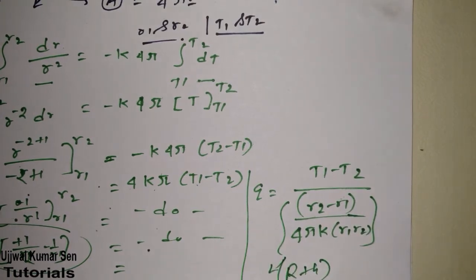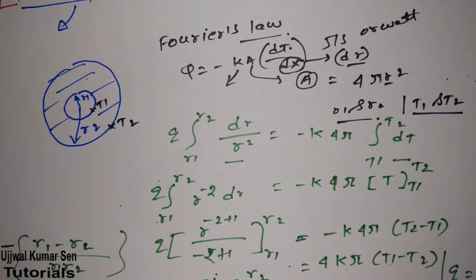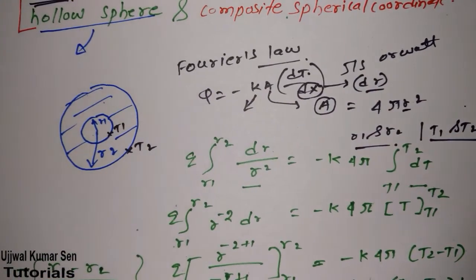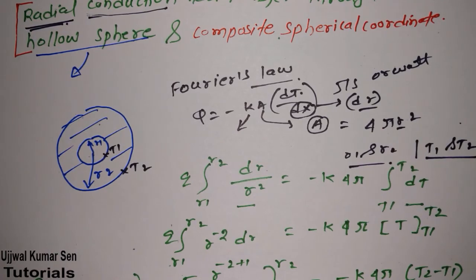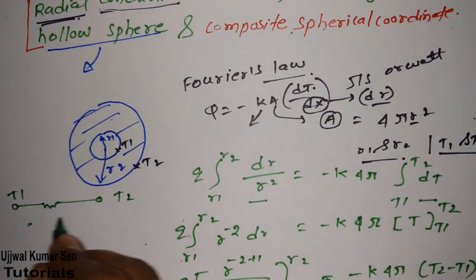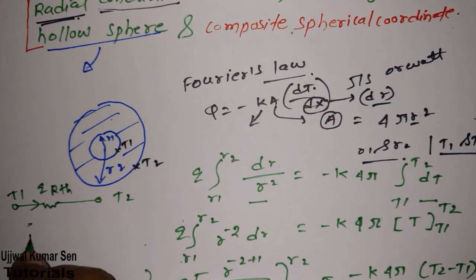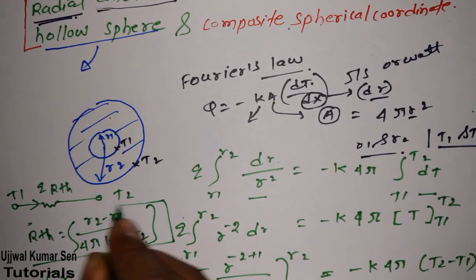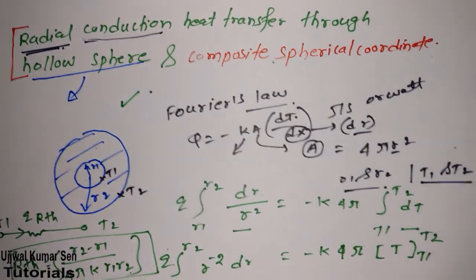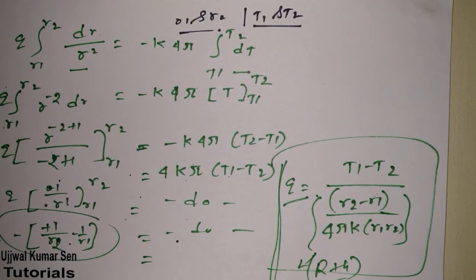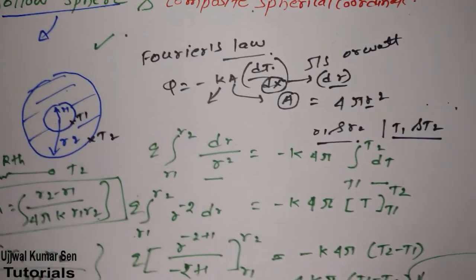The term (r2 minus r1) over (4πk r1 r2) is known as the thermal resistance, Rth. So we have derived the equation for the hollow sphere to find out q. The thermal circuit for the hollow sphere is: T1 and T2 connected by Rth, where Rth equals (r2 minus r1) over (4πk r1 r2).